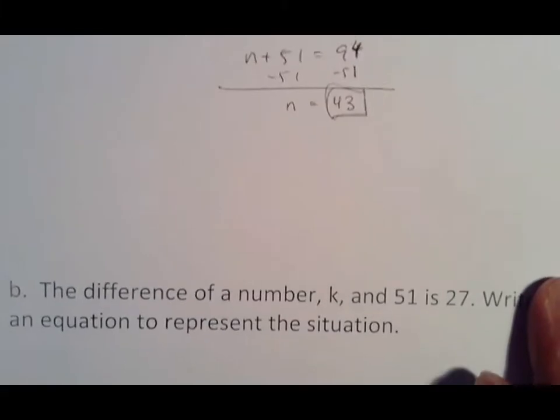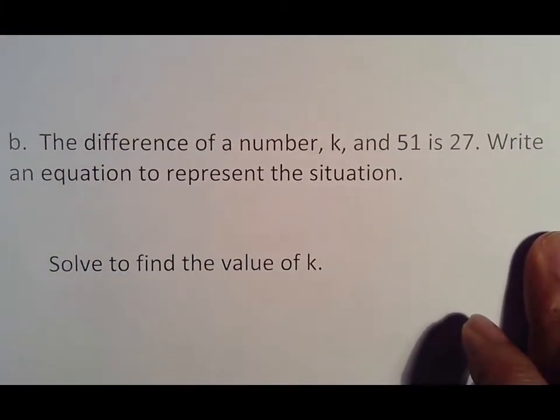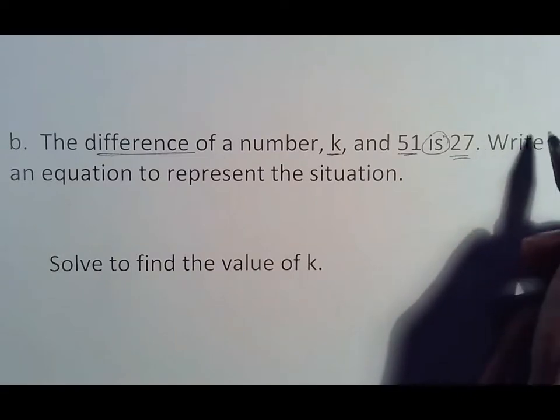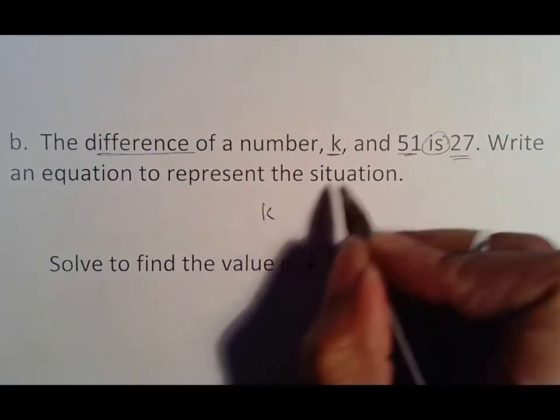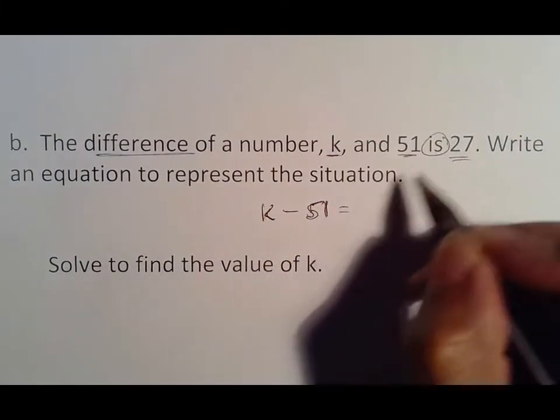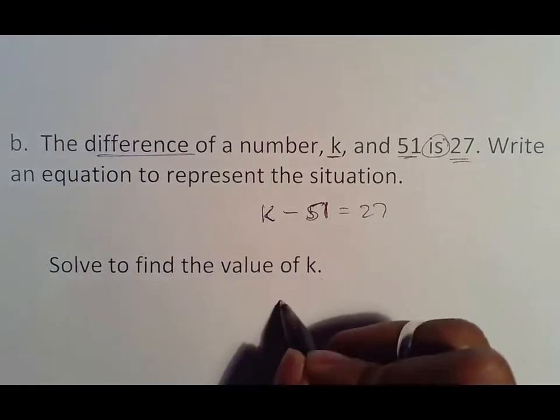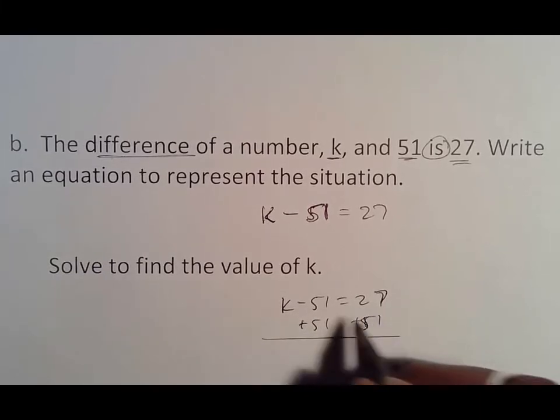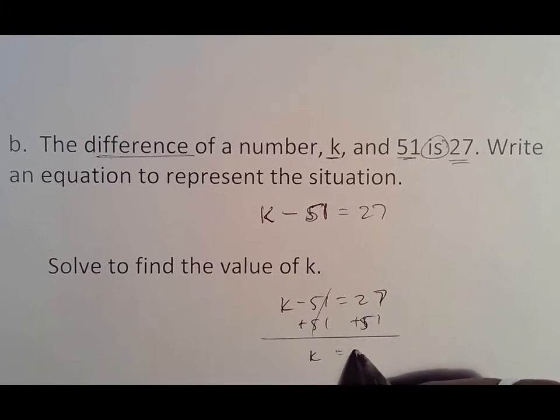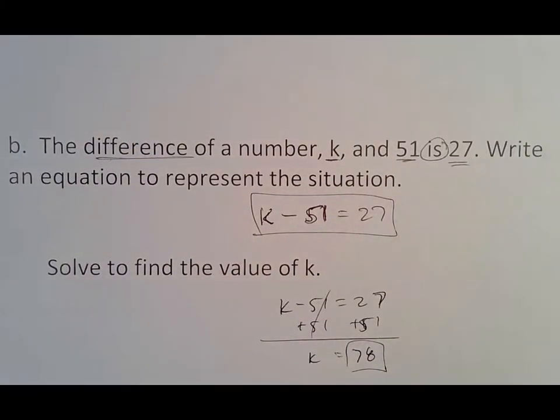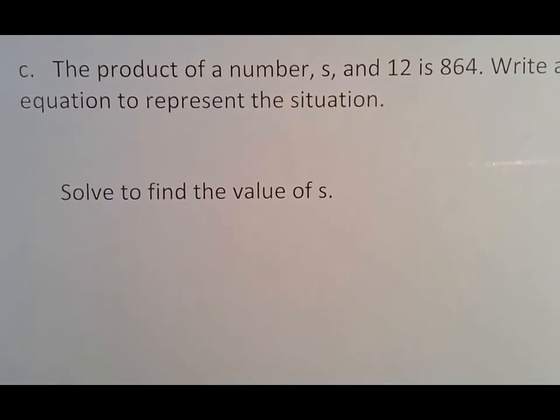The difference of a number k and 51 is 27. Write an equation. Difference means subtract. Difference of k and 51, is means equals 27. Difference means subtract, k is stated first, so k goes first minus 51. So k minus 51 equals 27. From there we're going to solve. We add 51 to both sides, k comes down, that makes 78 as your answer. Again, the only thing you have to worry about showing is the equation and the value for k.